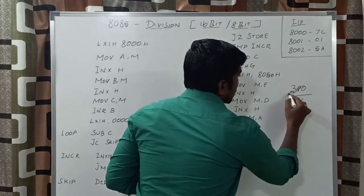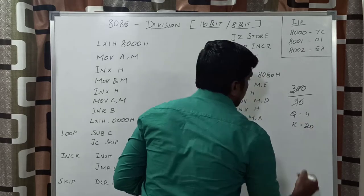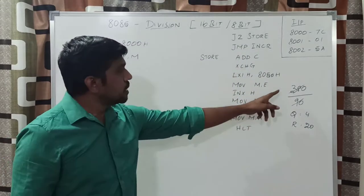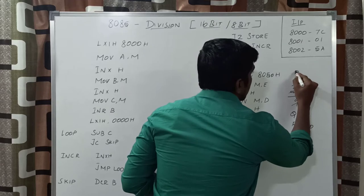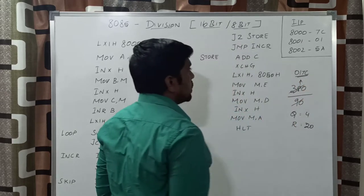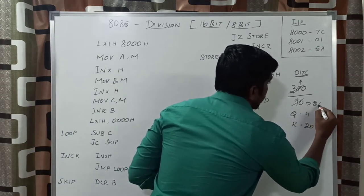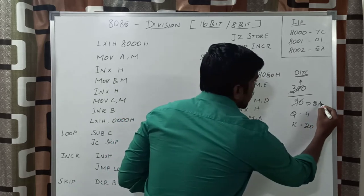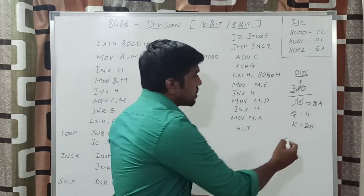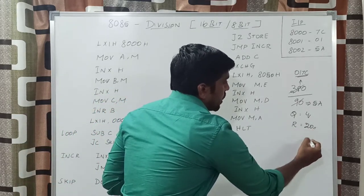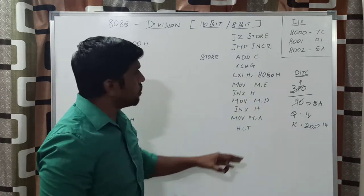Just divide this content. The quotient is 4 and the remainder is 20. First, convert this decimal value into hexadecimal. The equivalent hexadecimal value for 380 is 0173h — it is a 16-bit content. The equivalent hexadecimal value for 90 is 5Ah. Dividing 0173h by 5Ah, the quotient is 4 and the remainder is 20, which equals hexadecimal 14h. This is the expected response of this program.